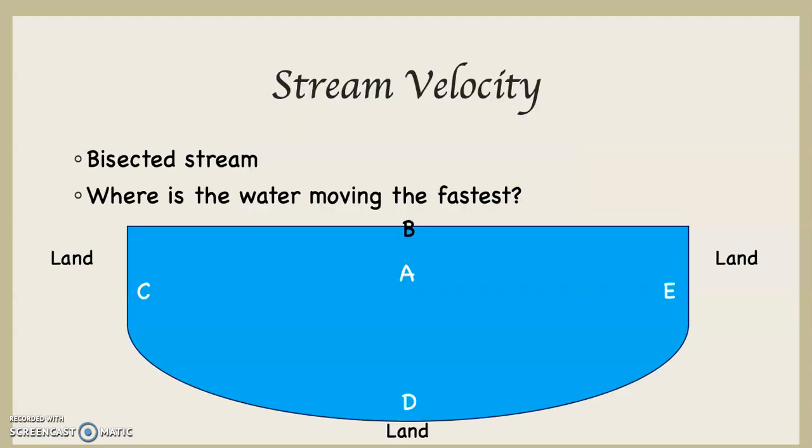The reason is because the other places all have friction going on. C, D, and E have friction with the land which is going to slow the water down. B has friction with the air, friction with the atmosphere. Are you kidding? Well, if you've ever been in a car that's going 50 miles an hour with the windows open and you stick your arm outside...